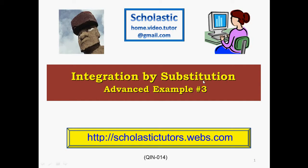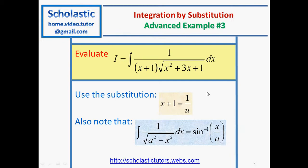Integration by substitution, advanced example number 3. Evaluate I equal to the integral of 1 over (x+1) times the square root of x squared plus 3x plus 1, dx. The substitution is given as x plus 1 equal to 1 over u.